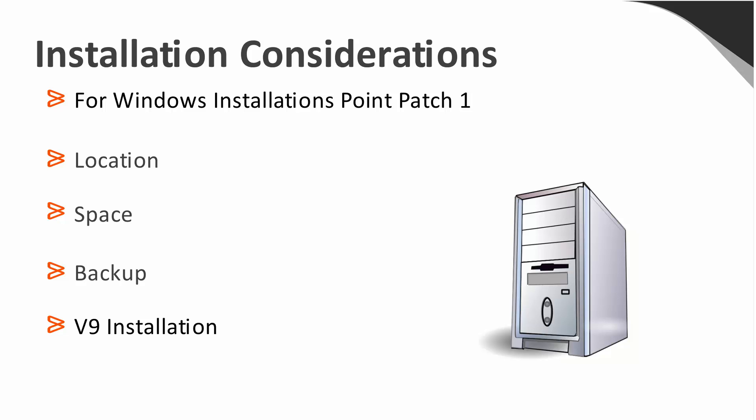What do you need to consider when you're installing workload archiving? When you're installing workload archiving onto a Windows machine, it's going to be required to install Point Patch 1. Where should you install workload archiving? We recommend a dedicated machine — this ensures that there is no performance impact for other Control-M components. How much space should you allocate? Each environment is different, but we recommend a minimum of 20 gigabytes.